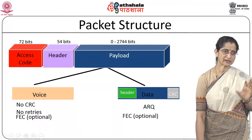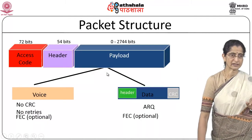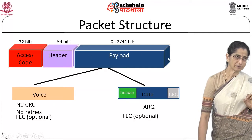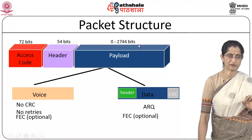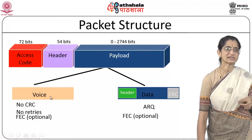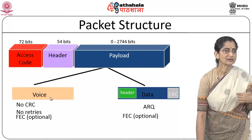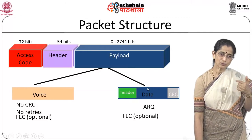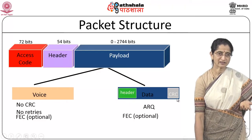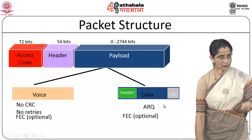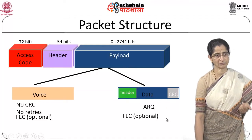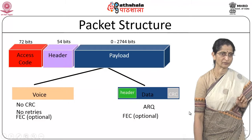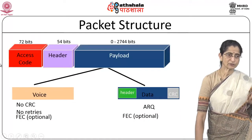Looking at the packet structure, each packet starts with a 72-bit access code, followed by 54 bits of header, and then a variable-length payload from 0 to 2744 bits. For voice payloads — real-time data — no CRC is used and no retransmissions are done. For other data, a CRC check is included and automatic repeat request with retransmissions is performed. An optional FEC mechanism can also be used.